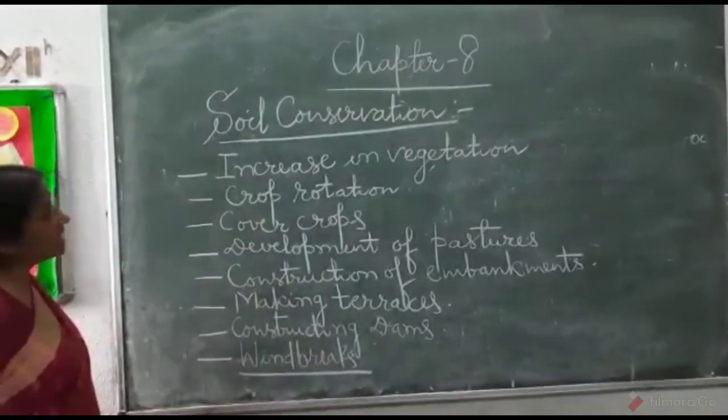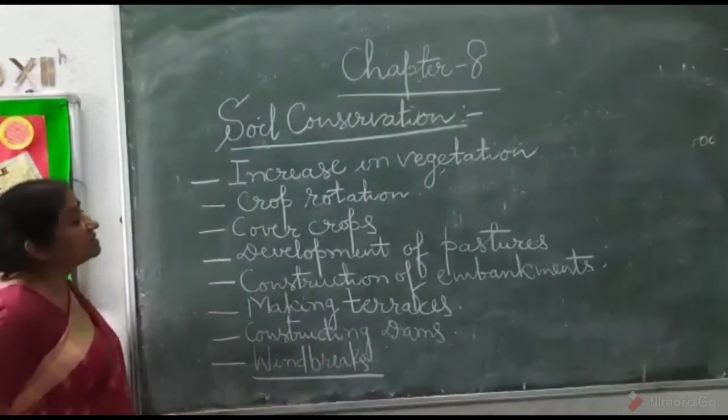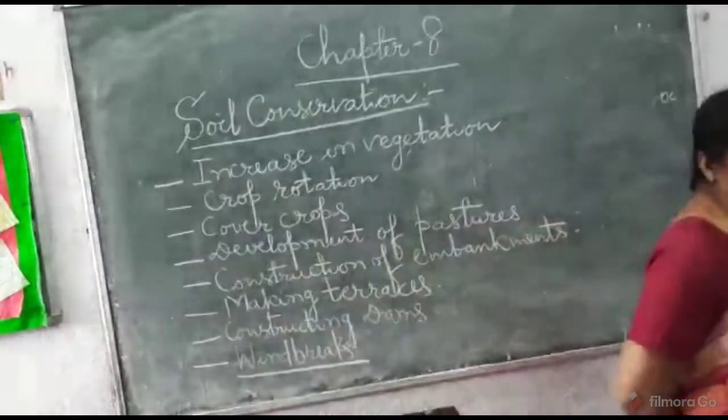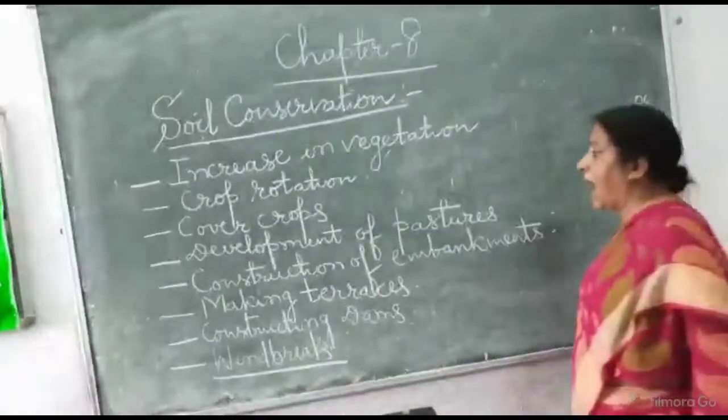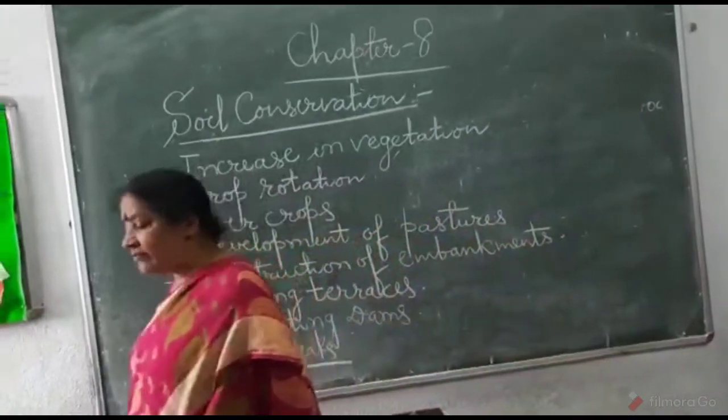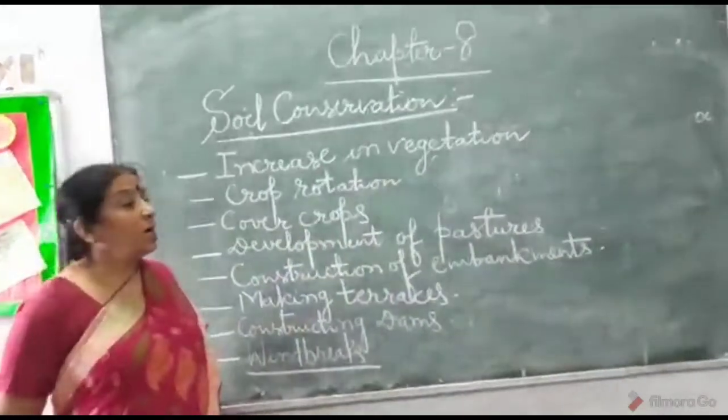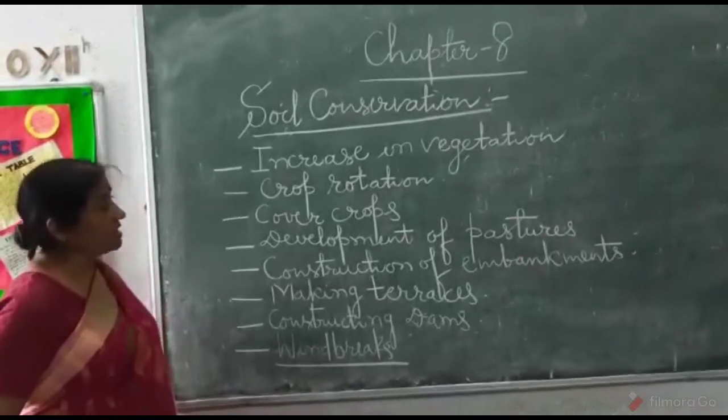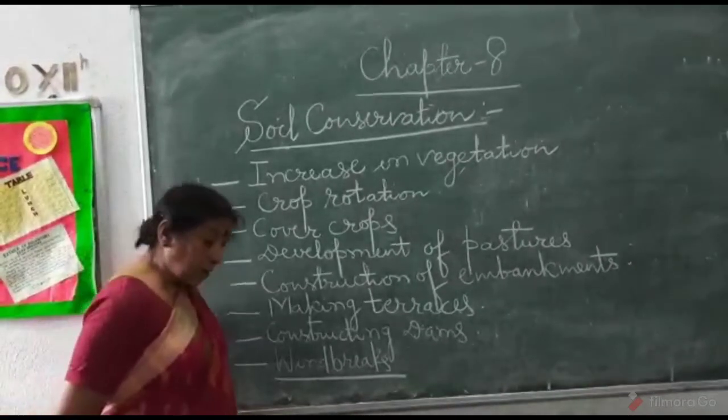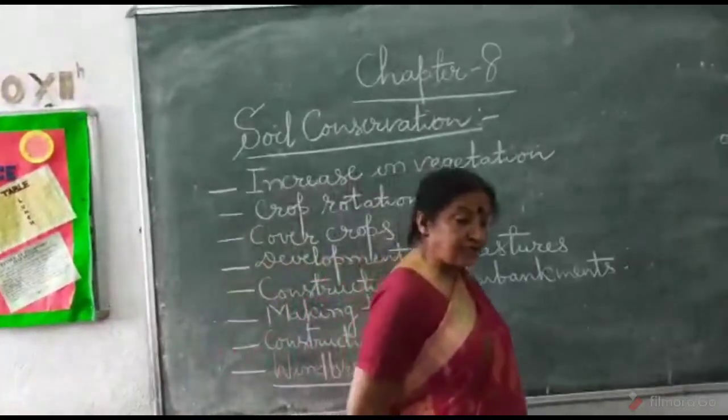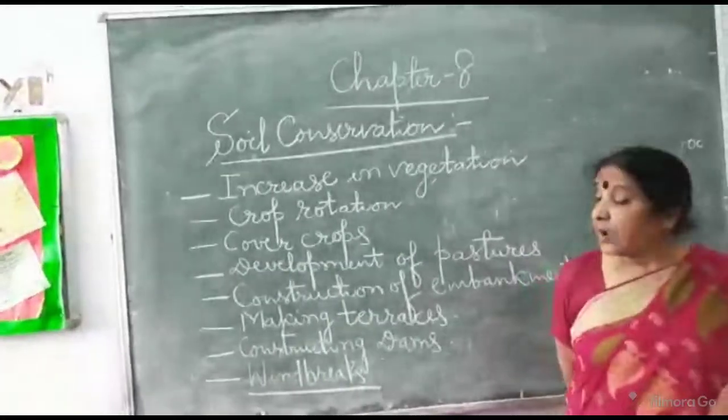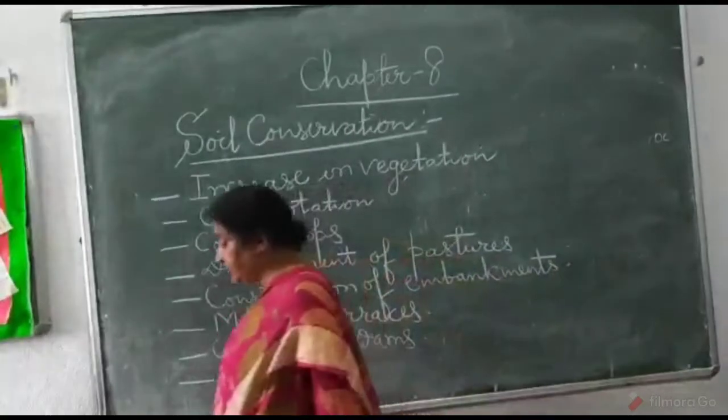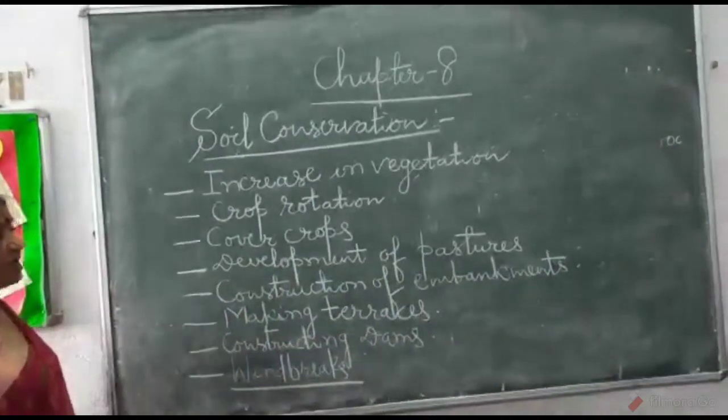The first step to conserve the soil is to increase vegetation. We discussed that deforestation is cutting trees and if we have cut trees for our needs, we have to go for reforestation. When we increase the vegetation, we will certainly protect the soil because all of us know that the roots of the plant bind the soil. So increasing vegetation can protect the top fertile layer of the soil.